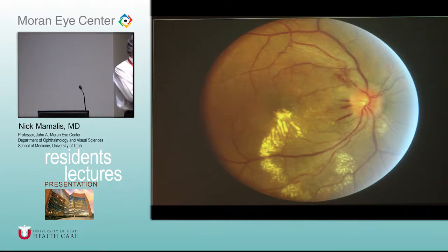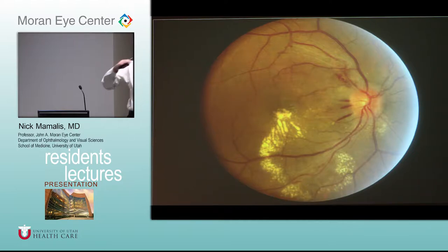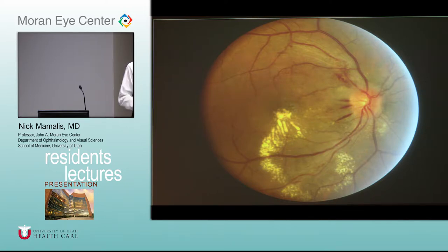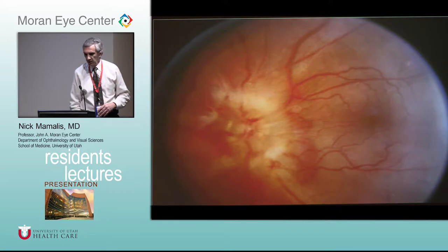Those hard exudates have radial lines — people call these little starbursts, like sun rays coming out. That appearance is because those exudates are going out in Henle's layer, spreading out in that sunburst pattern. Hard exudates here, and you see hemorrhages around the disc. The disc looks more congested than normal — when you have hypertensive retinopathy you can actually get disc swelling along with it.